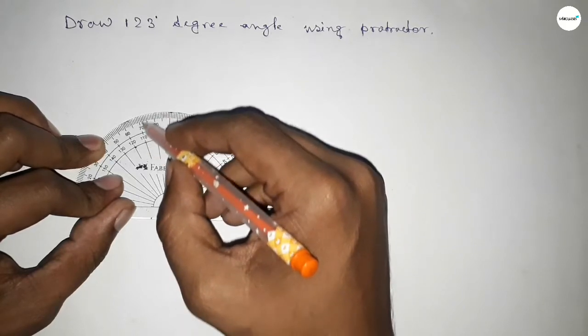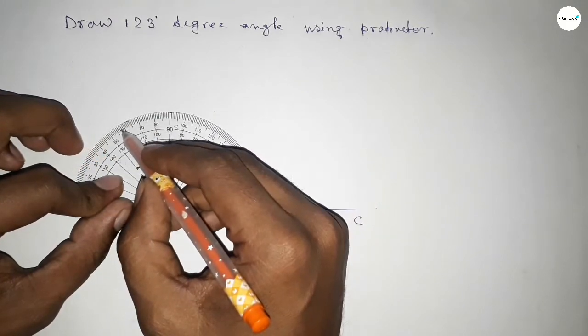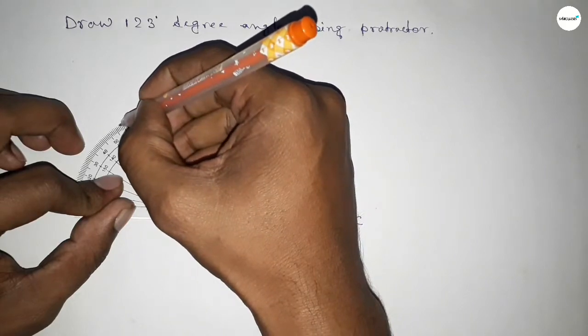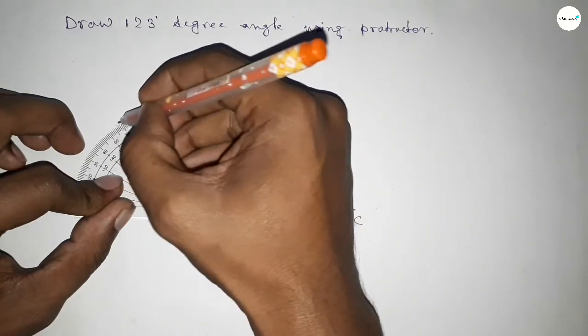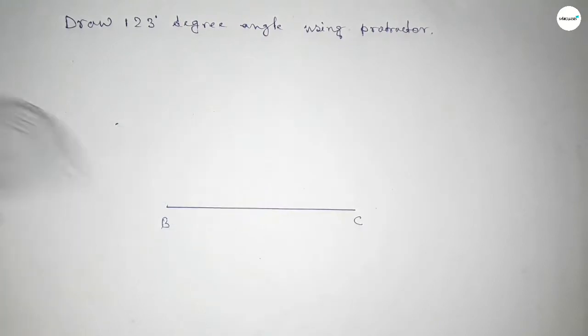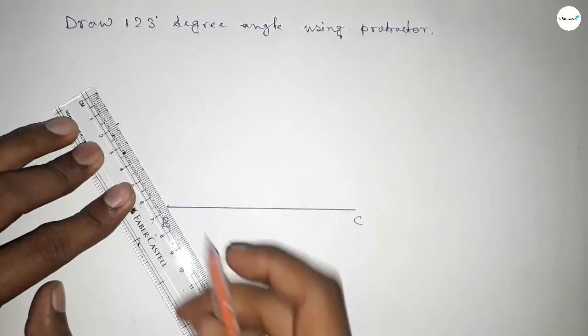80, 90, 100, 110, 120, 121, 122, 123. So this is 123-degree angle. Now joining this side to get 123-degree angle.